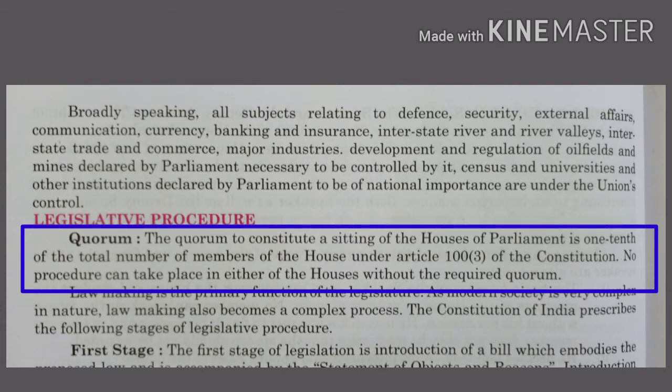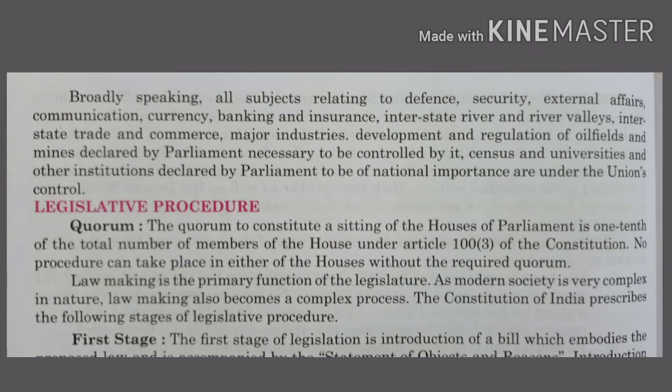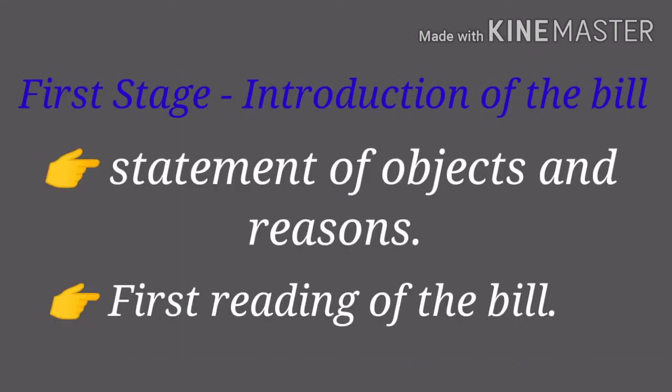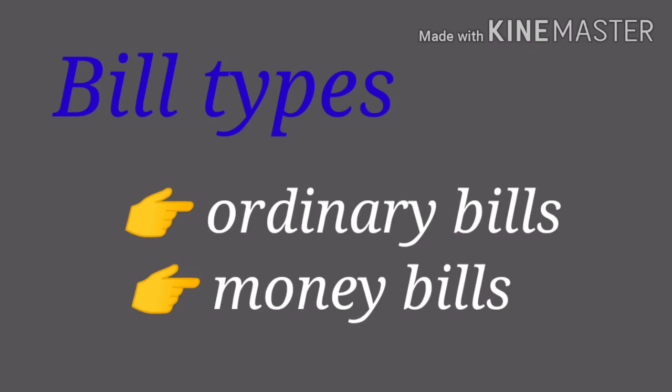This is according to Article 103 of the Constitution. The law making is a complex process and the Constitution of India prescribes that it be done under three stages. At the first stage, the bill is introduced. The bill embodies the proposed law along with the statement of objects and reasons. This introduction is also known as the first reading of the bill.